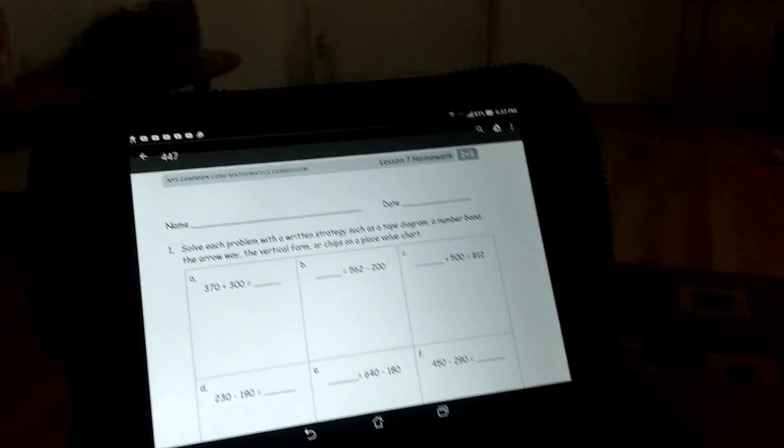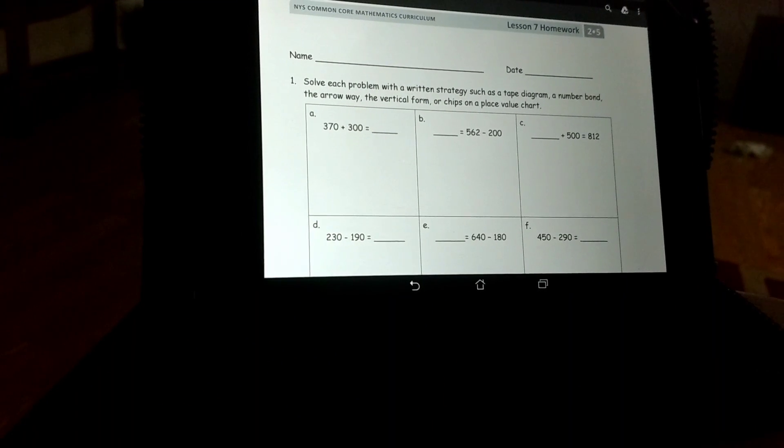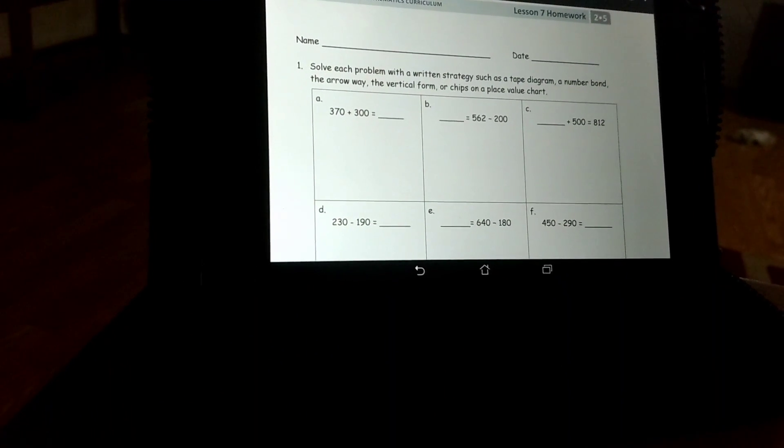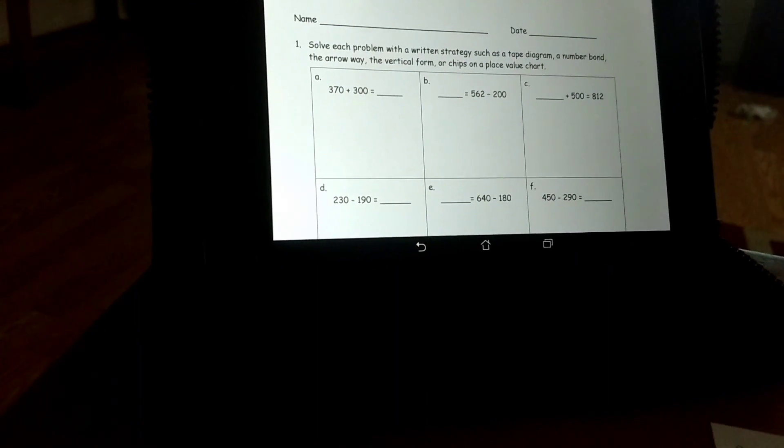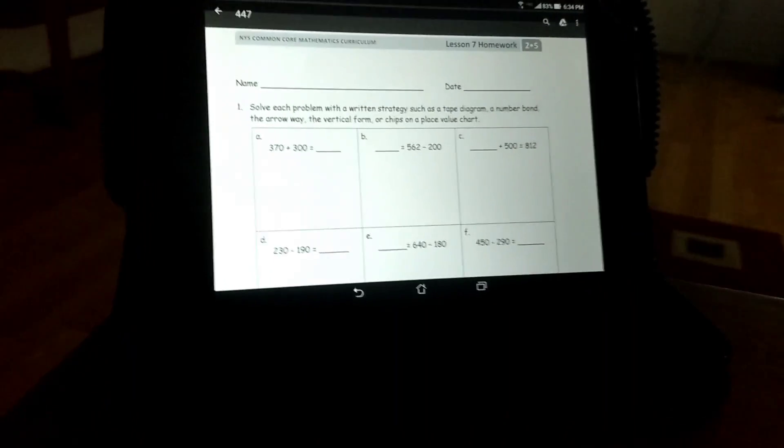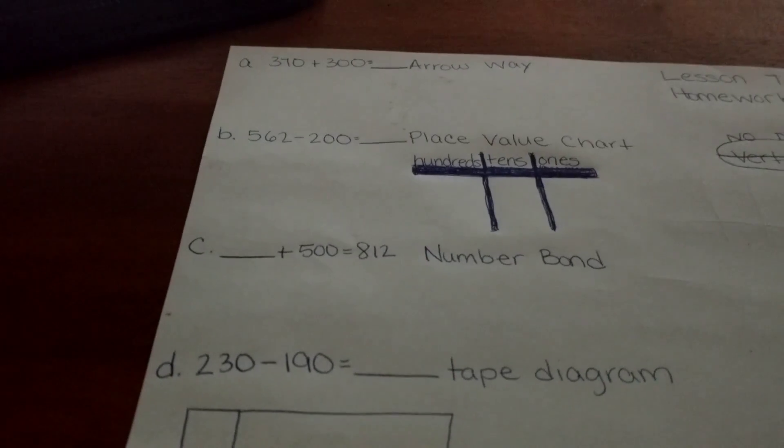Hello, this is Ms. Duvall. I just wanted to remind your students what the tape diagram, number bond, arrow way, and place value chart methods are for solving problems. We are not solving vertical form, even though the homework does say that. Please do not solve vertical form. These are the four methods that we are going to be using.